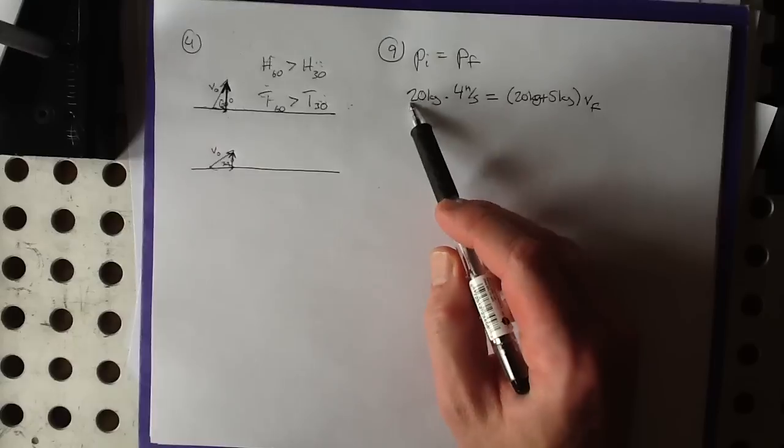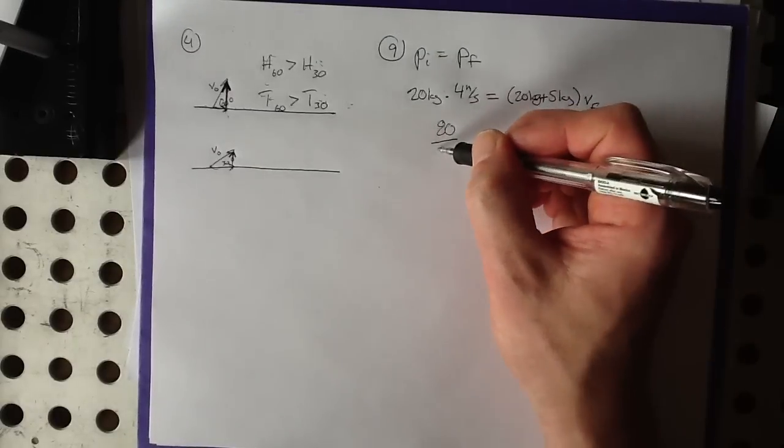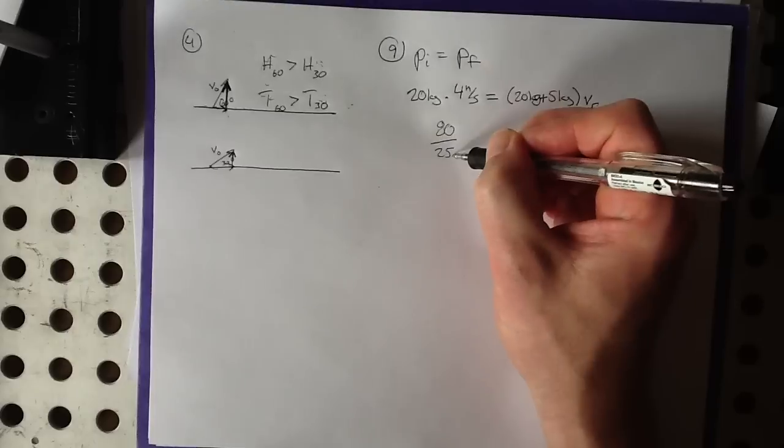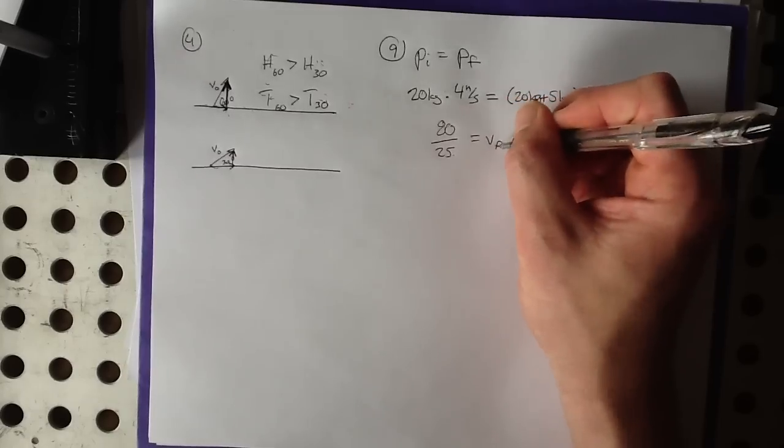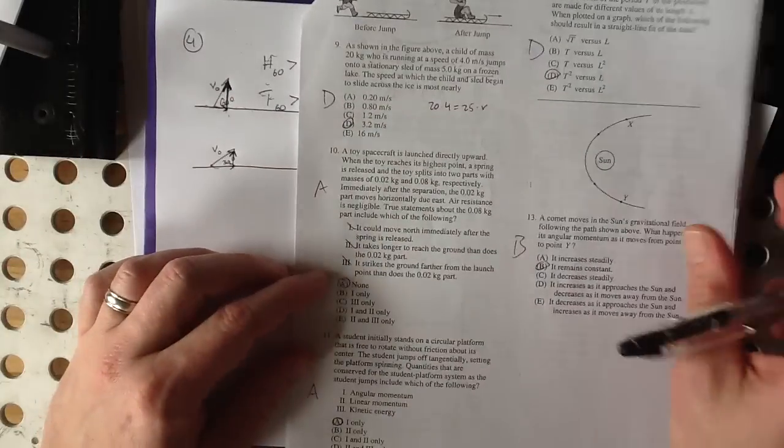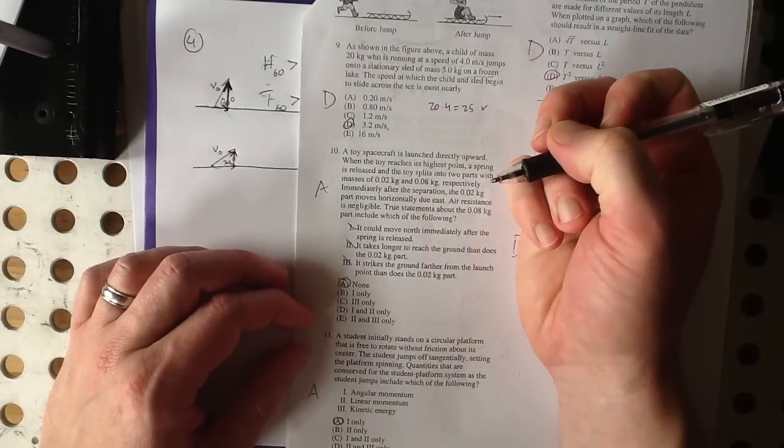So we've got a child and sled, and we don't know what the final velocity is. So multiplying, that's 80 and dividing by 25. Well, 75 divided by 25 would be 3, so 3 and a bit. And that would be answer choice D, 3.2 meters per second.